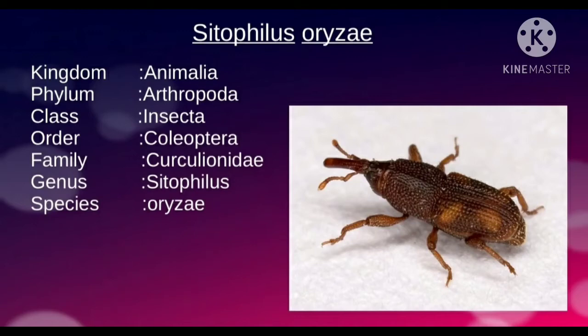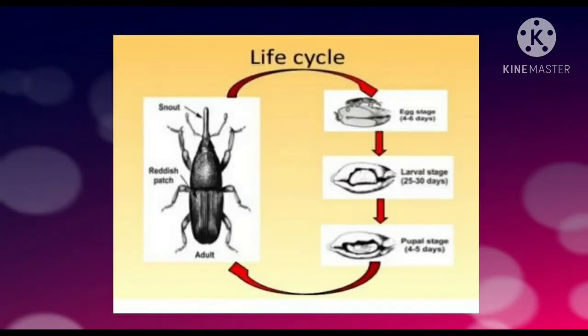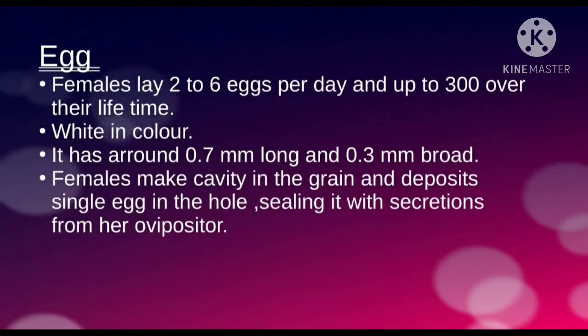The genus is Sitophilus and the species is oryzae. Its life cycle includes four stages: egg stage, larval stage, pupal stage, and finally the adult stage. First is the egg stage. Females lay two to six eggs per day and up to three hundred over their lifetime.